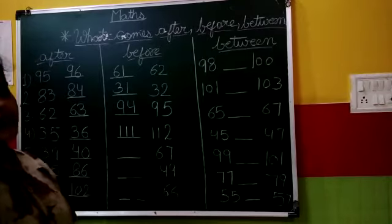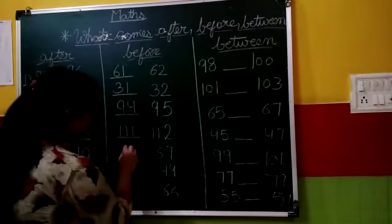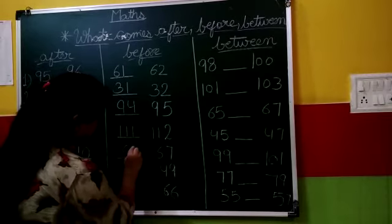Next is 67. What number comes before 67? 66.